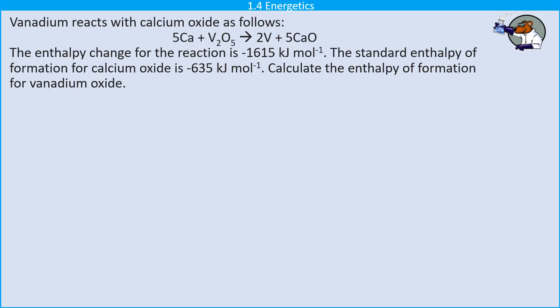This is a Hess's law question. So it's all about this idea that the enthalpy change for a chemical reaction is independent of the route taken. In other words, it doesn't matter how you get from A to B. As long as you get there, the enthalpy change will be the same.